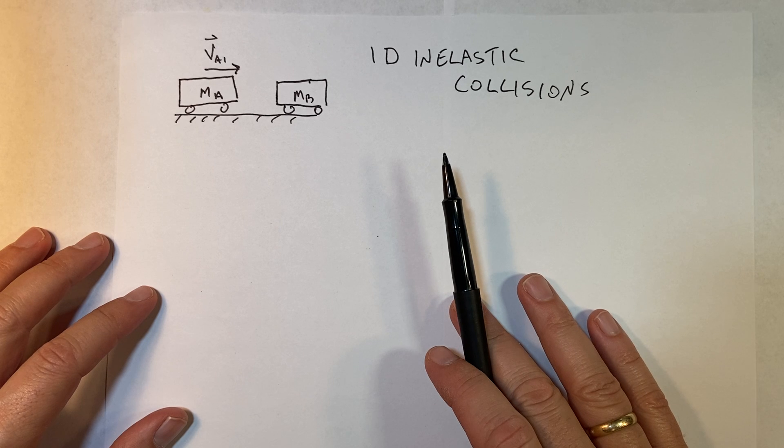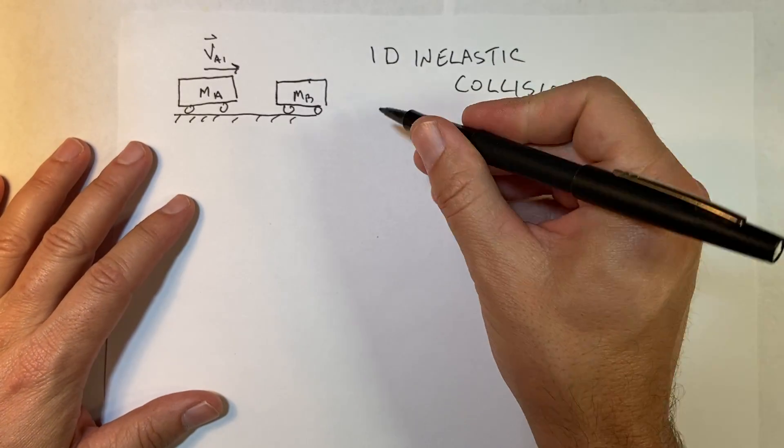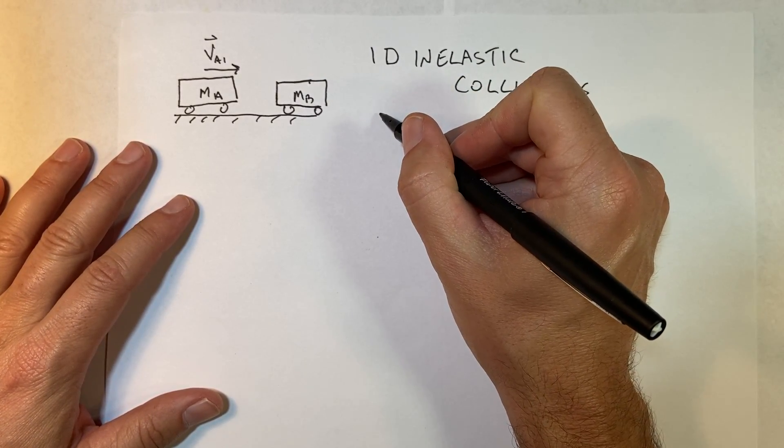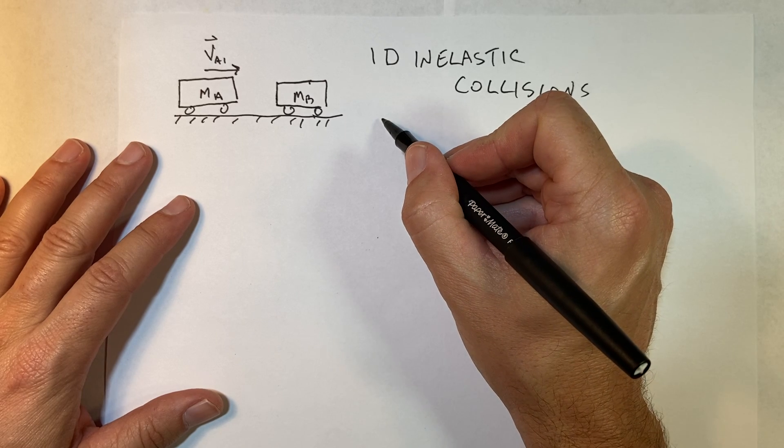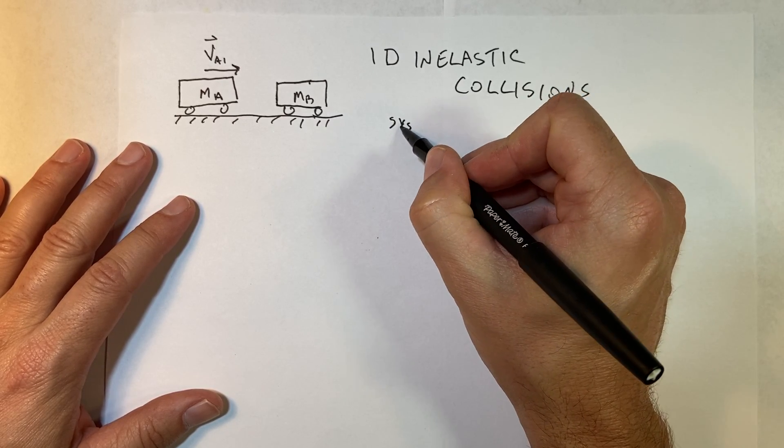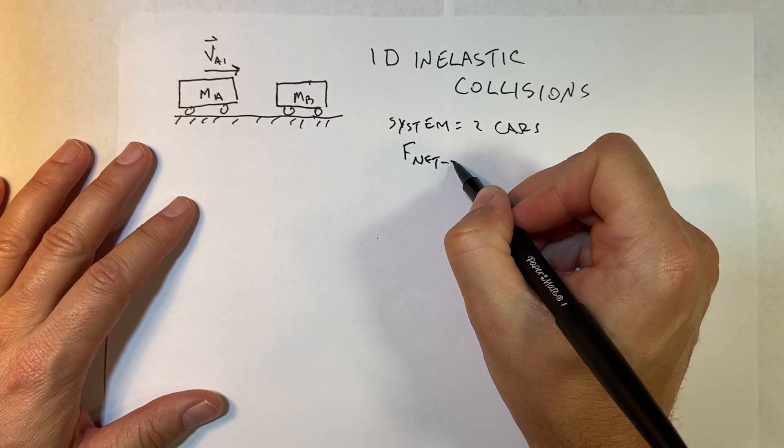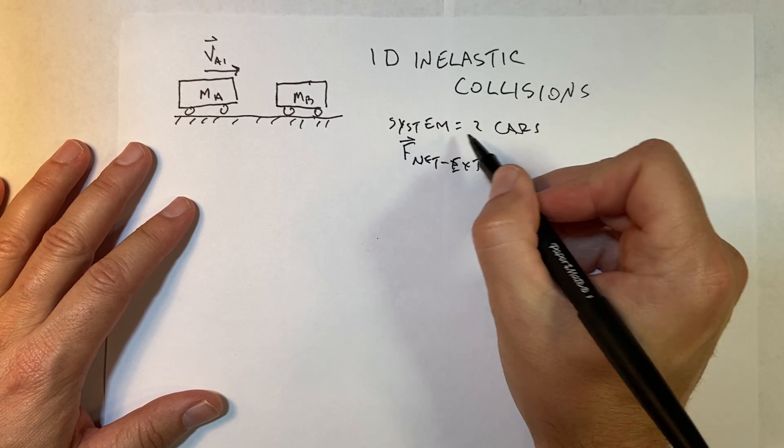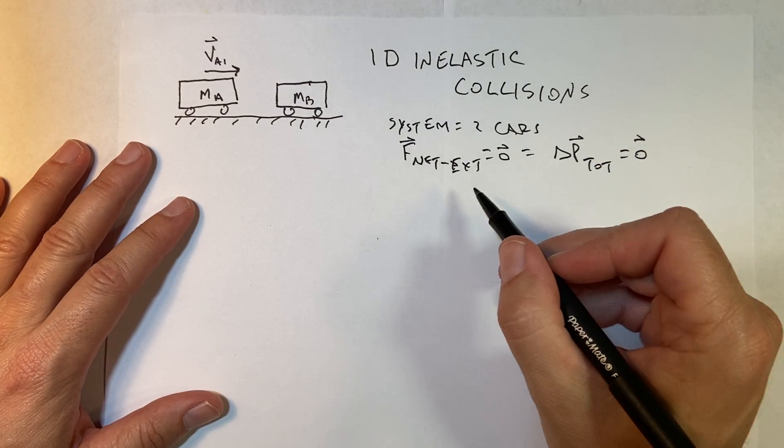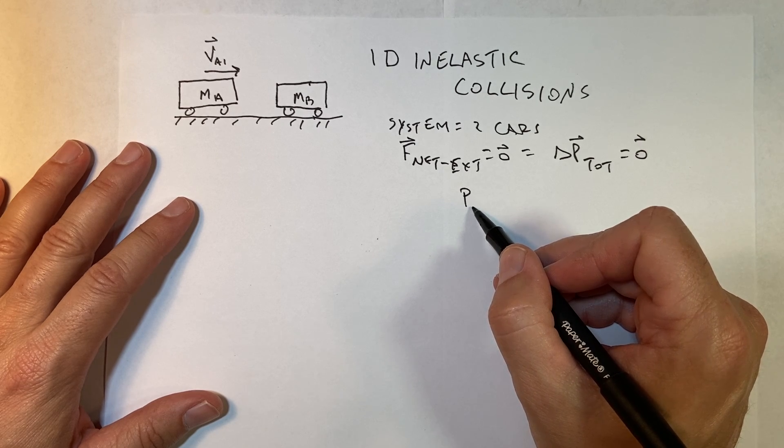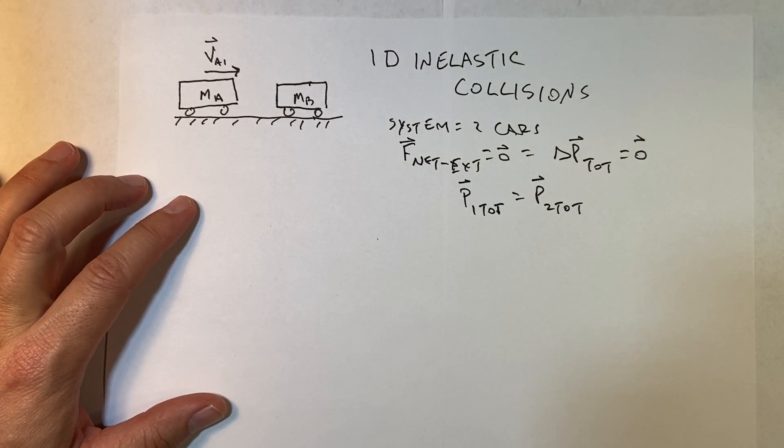Okay, one-dimensional collisions, inelastic collisions. Let's review what we looked at before for a collision. If there's no external forces, or if the collision is very short, if there's no net external force on the system of the two cars, F net external equals zero, then delta P total equals zero. This means the initial momentum P total before the collision is equal to P total after the collision. We derived that based on the momentum principle.